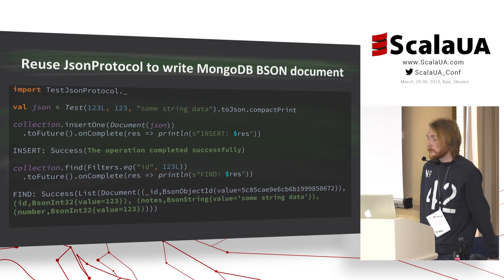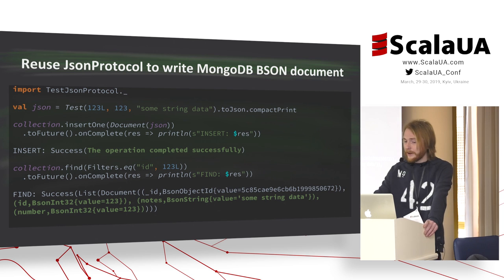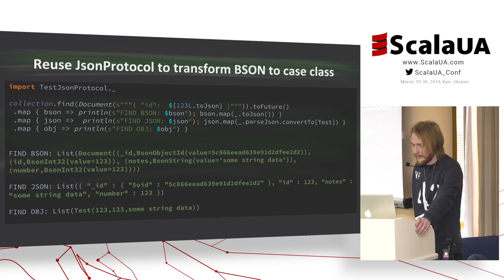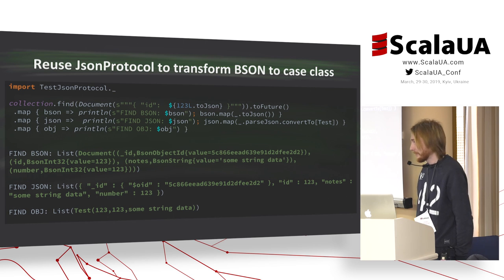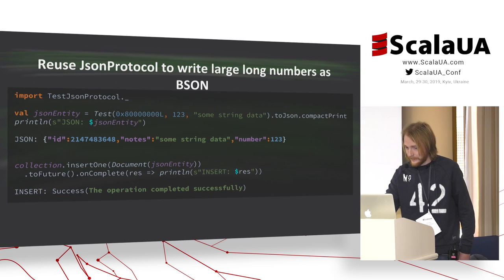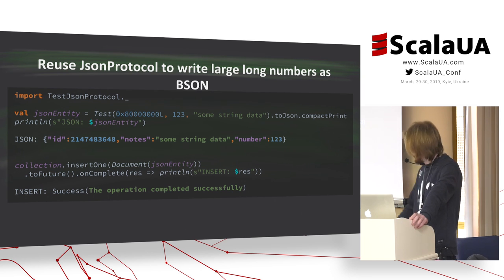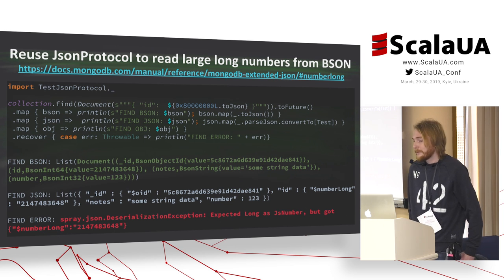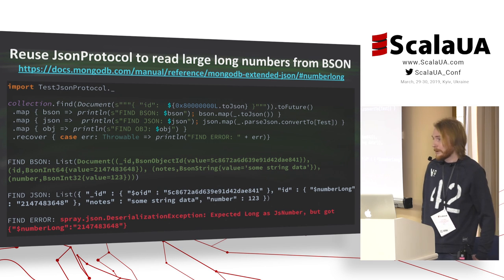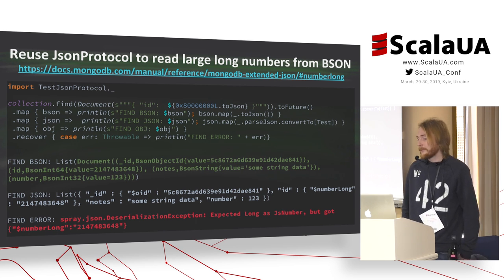The current slide explains how to build a BSON document from an entity's JSON using the existing TestJSON protocol. A second find query selects the document from MongoDB and prints the BSON. Another find query uses the existing TestJSON protocol to transform BSON to a TestCaseClass instance — it works well. This slide shows an example of inserting a document with a large long number. A find query will throw an exception because the existing JSON protocol uses the long JSON format defined in SprayJSON.